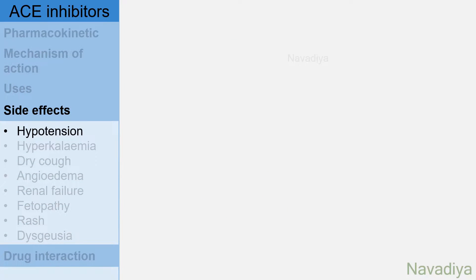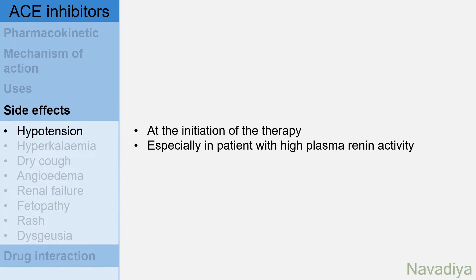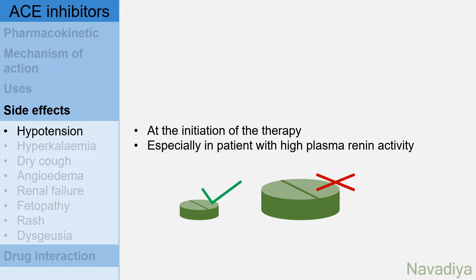Now let's move to side effects. First, an obvious one is hypotension. It is seen at the initiation of therapy especially in patients with high plasma renin activity. You can start therapy with a low dose rather than the regular dose in such patients to minimize this side effect.